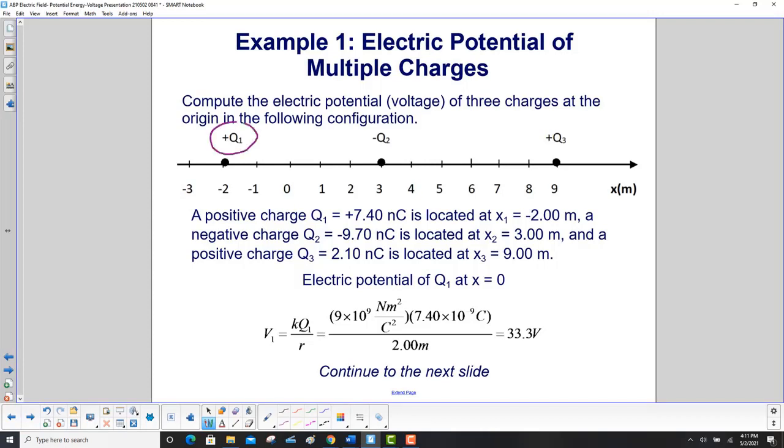First, we'll find the electric potential of charge one at zero. How far away is it? It's two meters. You put in the charge here. This might be new: nC, nanocoulombs, nano is 10 to the minus nine. Here's Coulomb's constant. The voltage is KQ over R. We have 33.3 volts due to Q1.